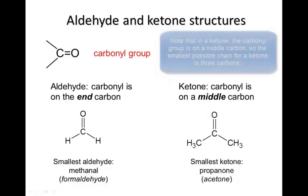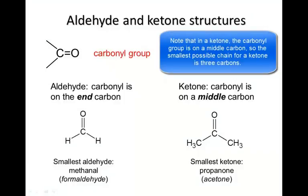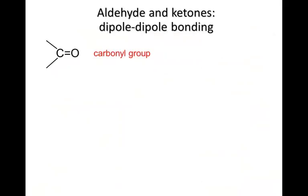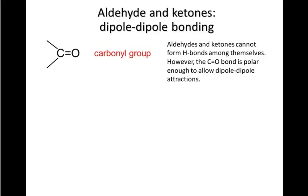The smallest possible ketone has three carbons. This is propanone, more commonly known as acetone. Because oxygen is more electronegative than carbon, the carbonyl bond is polar. The oxygen has a partial negative charge, and the carbon has a partial positive charge.